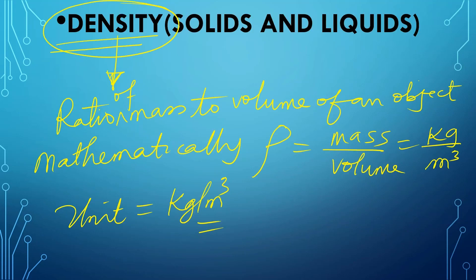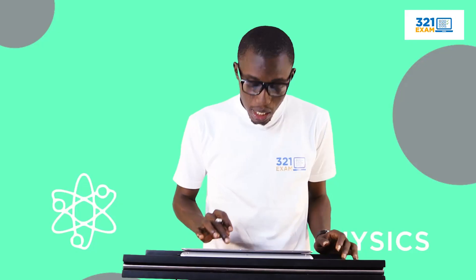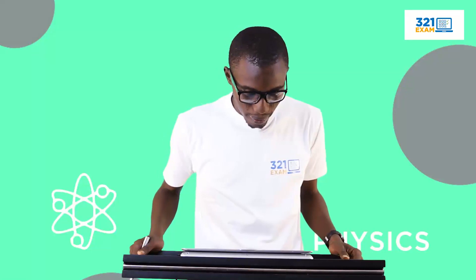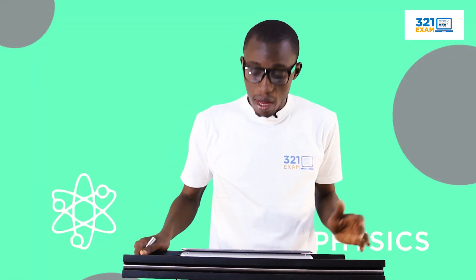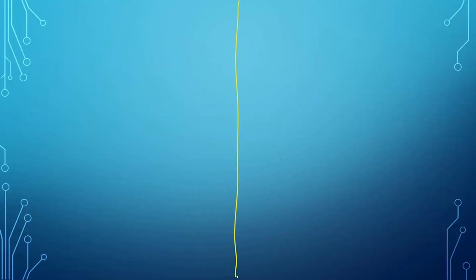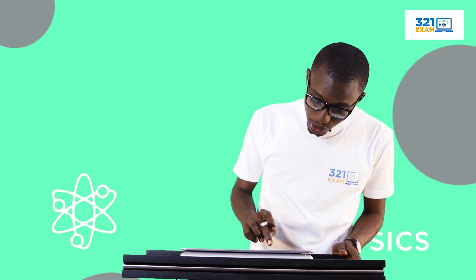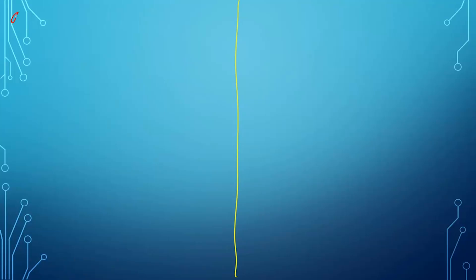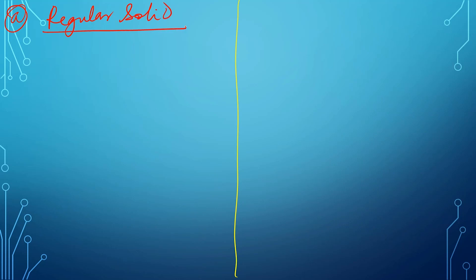Now the first thing we want to consider is the density of a solid. How do you calculate the density of a solid aside from using this formula? There are two categories of solid. The first is a regular solid. Regular solids are solids with specific dimensions — they have length, breadth, and thickness — making them three-dimensional shapes.